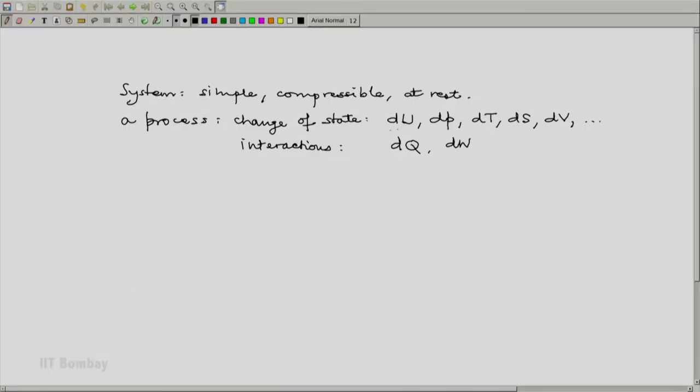First, the change of state can be related by the property relation. So the first relation is the property relation, and that relation is TdS is dU plus PdV. The second relation is the first law. What is the first law? The first law simply says dQ equals dU plus dW.